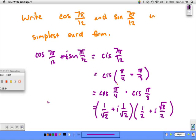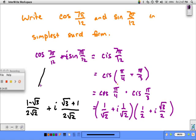And if we foil this, expand this out, what we will end up with is 1 minus the square root of 3 over 2 square root of 2 plus i times the square root of 3 plus 1 over 2 square root of 2, and these will correspond.